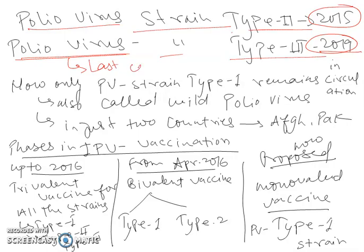The last case of type 3 poliovirus was in 2012 in Nigeria. Since then, no new case has been observed of the type 3 poliovirus strain. This is the reason that on October 24th, 2019, the Global Commission for Certification of Poliomyelitis Eradication declared type 3 poliovirus strain as eradicated.